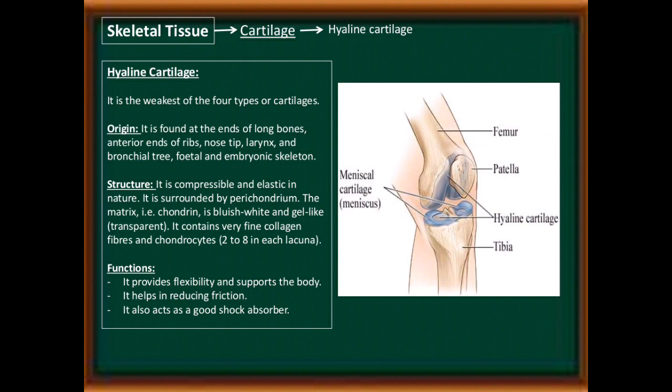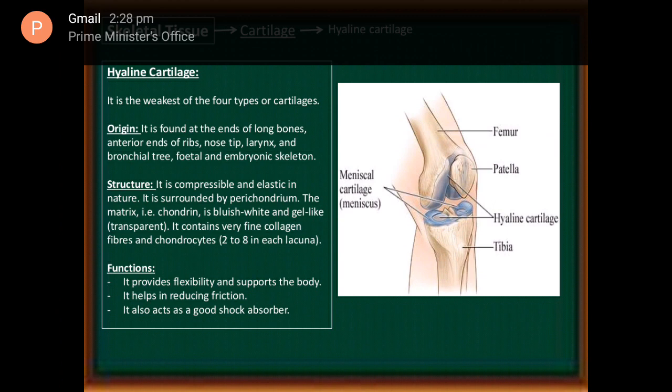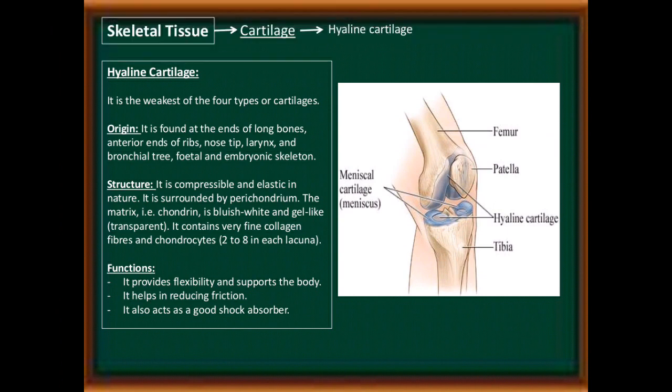First: hyaline cartilage. It is the weakest of the four types of cartilage. It is found at the ends of long bones, anterior ends of ribs, nose tips, larynx, bronchial tree, and fetal and embryonic skeleton. It is compressible and elastic in nature, surrounded by perichondrium. The matrix (chondrin) is bluish-white, gel-like, and transparent, containing very fine collagen fibers and chondrocytes (2 to 8 per lacuna). It provides flexibility and support, helps reduce friction, and acts as a good shock absorber.